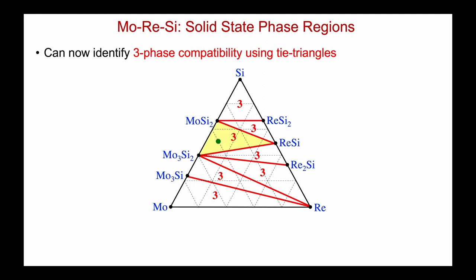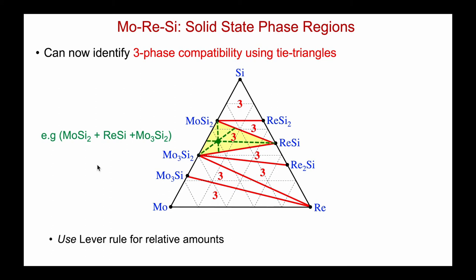The example shown here is an overall composition shown in green. It lies in a three-phase region where MoSi₂, ReSi, and MoSi₂ are the stable phase assemblage that will form. And as mentioned, we can use the lever rule to be more specific in figuring out the relative amounts of each phase.